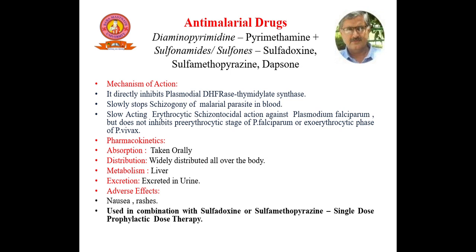The next category is diaminopyrimidine, i.e. pyrimethamine, in combination with sulfonamides and sulfones — sulfadoxine, sulfamethopyrazine, and dapsone. These drugs directly inhibit plasmodial DHFR and thymidylate synthase enzyme, slowly stopping schizogony of the malarial parasite in blood. It is also slow-acting erythrocytic schizontocidal against P. falciparum, but does not inhibit the pre-erythrocytic stage of P. falciparum or the exo-erythrocytic phase of P. vivax. These drugs are taken orally, widely distributed, metabolized in liver, and excreted in urine. Adverse effects are nausea and rashes. Pyrimethamine is used in combination with sulfadoxine or sulfamethopyrazine as a single-dose prophylactic therapy.